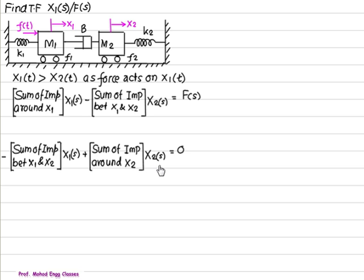We have the same formulation. When you are writing the sum of impedance around X1, X1 is with M1, so you have to write down almost all elements about M1, that is K1, M1, B. So, impedance of M1 is M1 square.